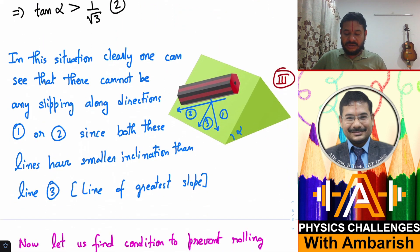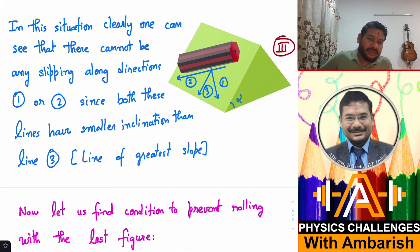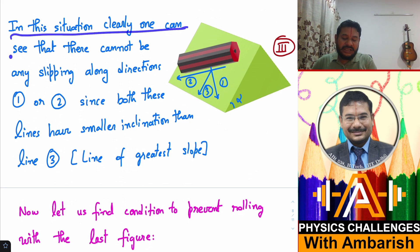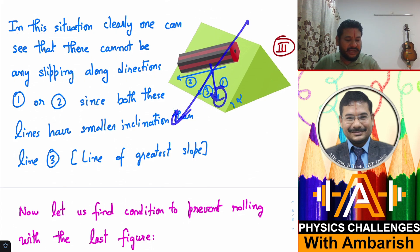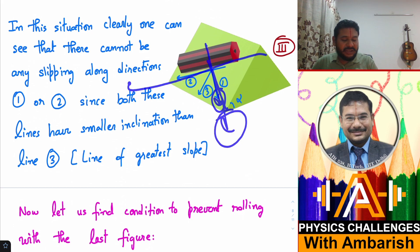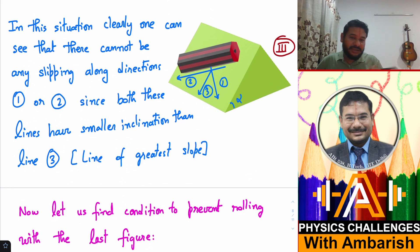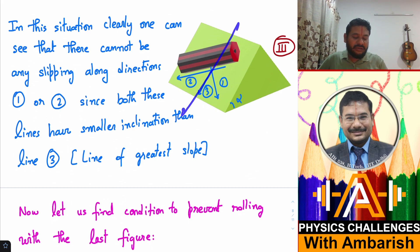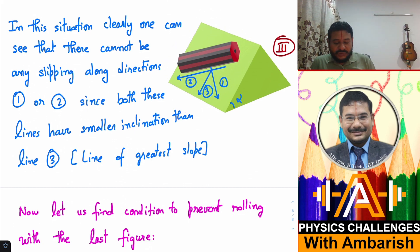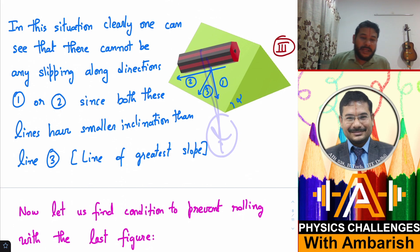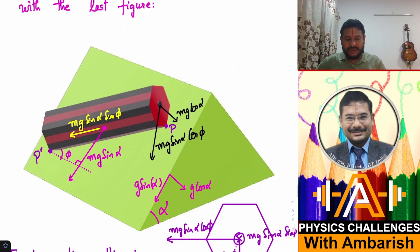Now for the general situation with angle phi: one can see that there cannot be any slipping along directions one or two, since both are less steep than the line of greatest slope. Even at the line of greatest slope no slipping occurred in case one, so there's no question of slipping here. We only need to prevent rolling in direction one.